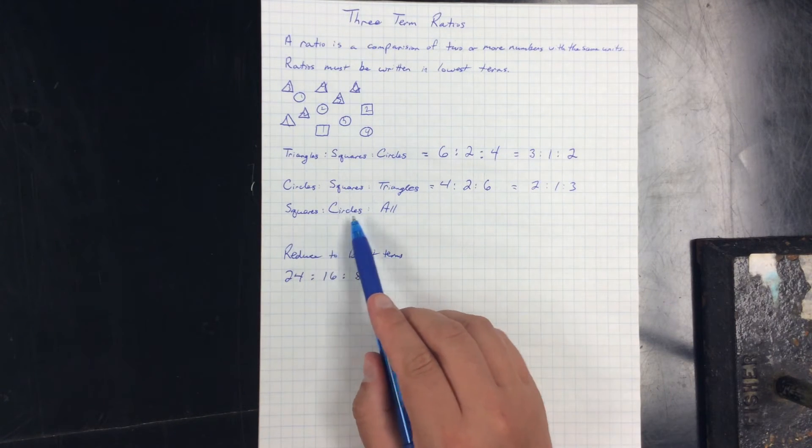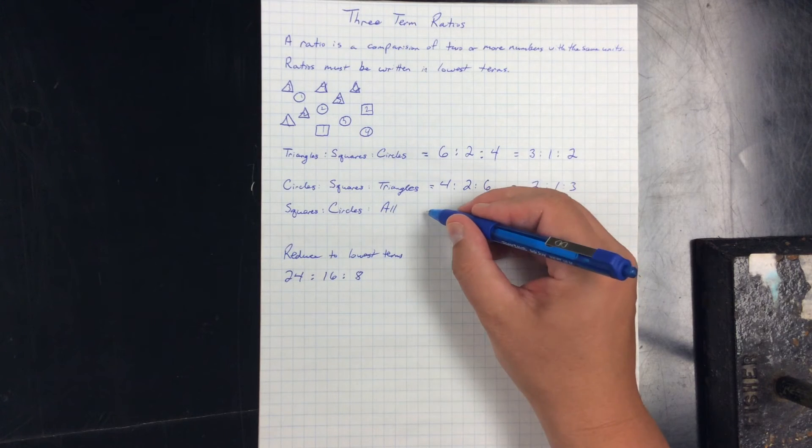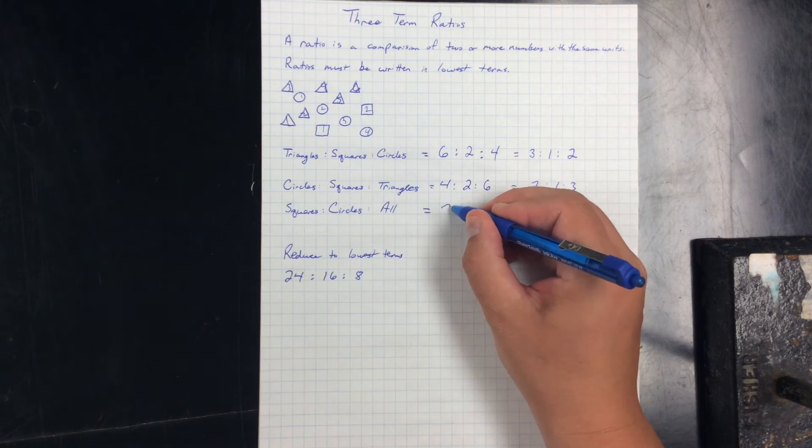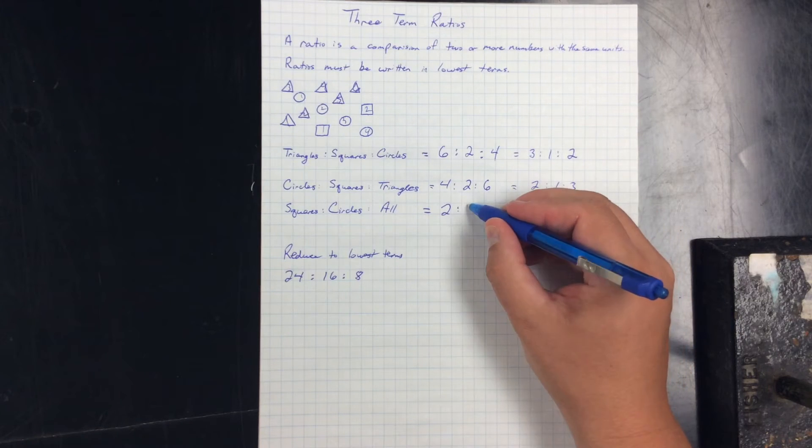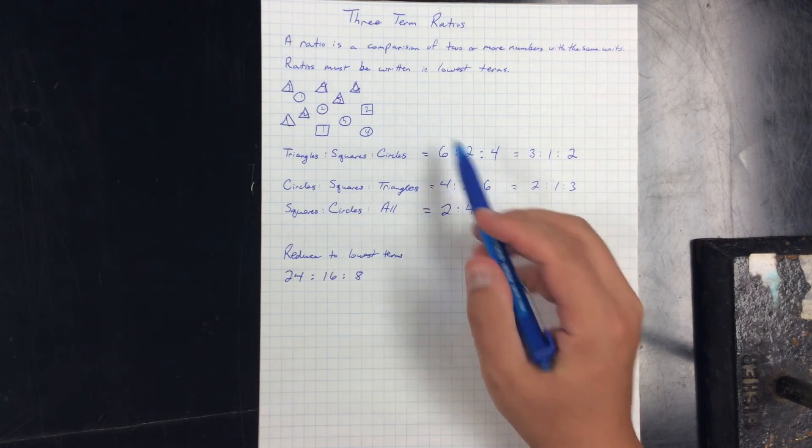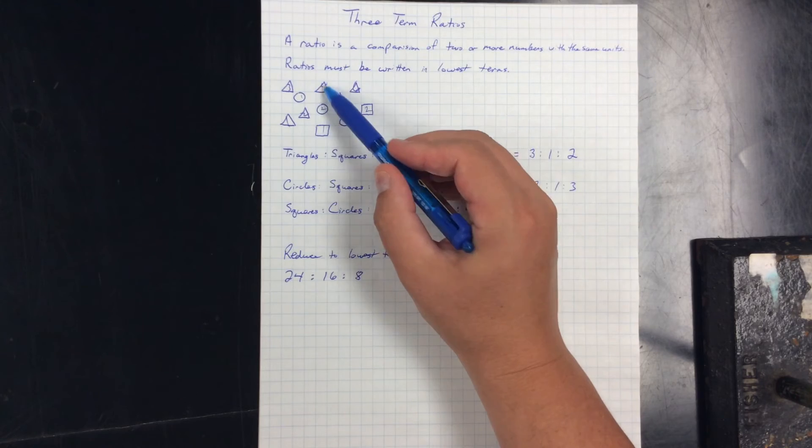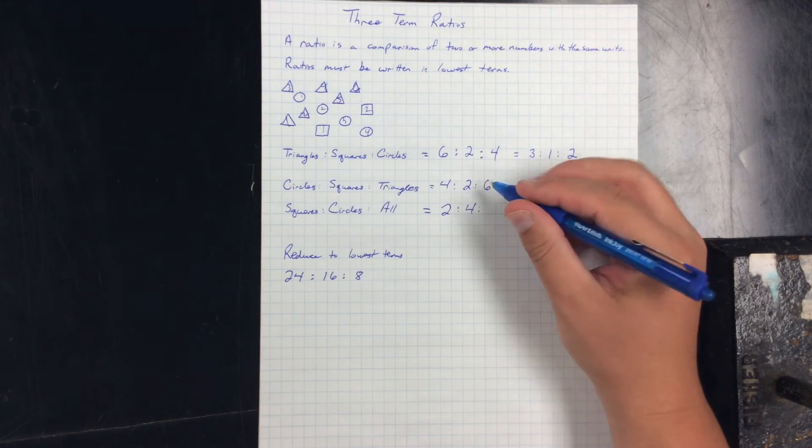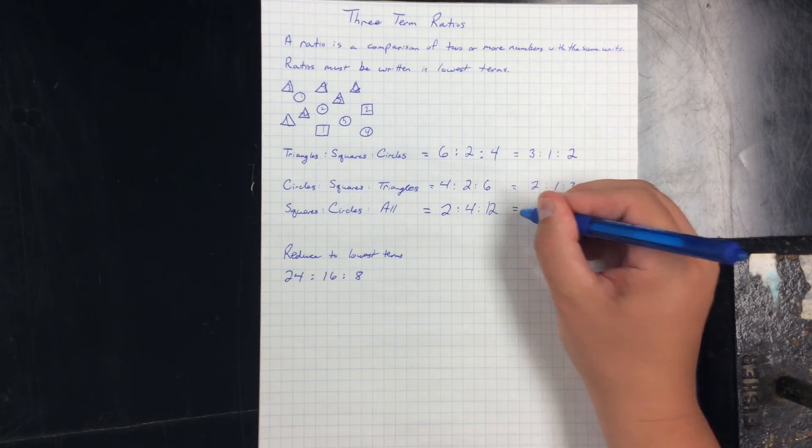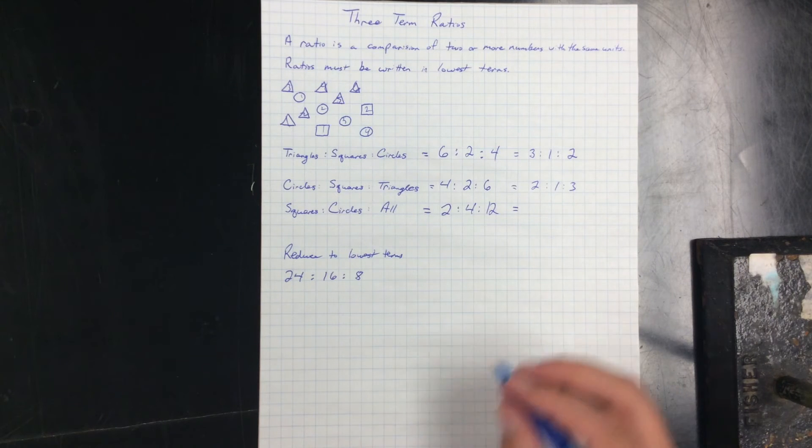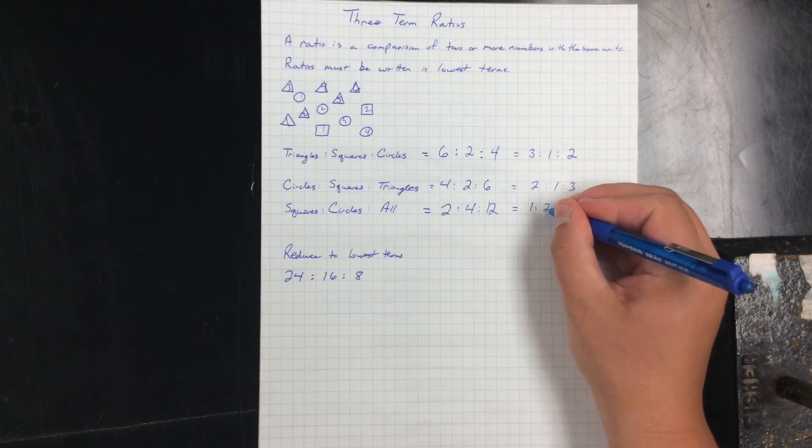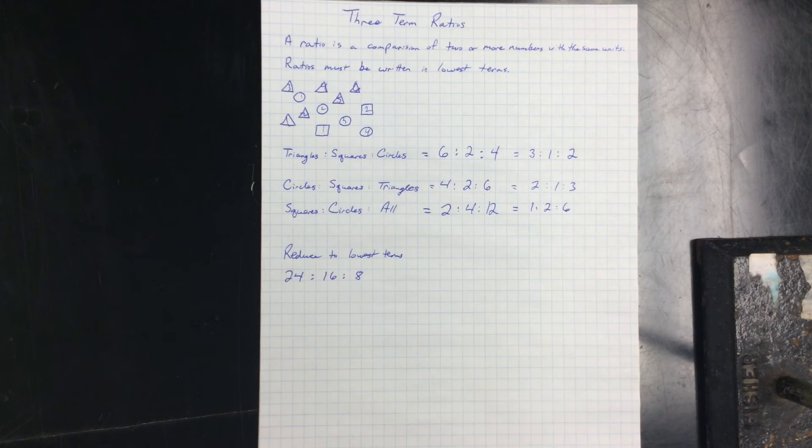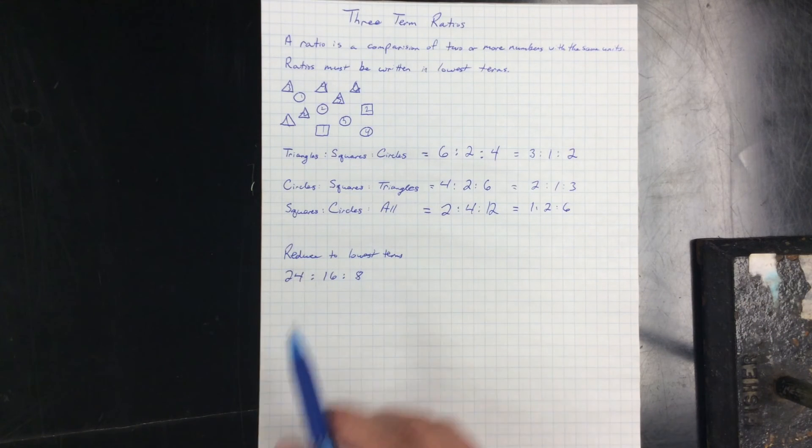Let's go squares to circles to all shapes. So squares, we had two. Circles, we had four. And all, one, two, three, four, five, six, seven, eight, nine, ten, eleven, twelve. Again, they're all even, so they're going to divide by two. So you have one to two to six, and I keep them in that order because it's the order that they were given.